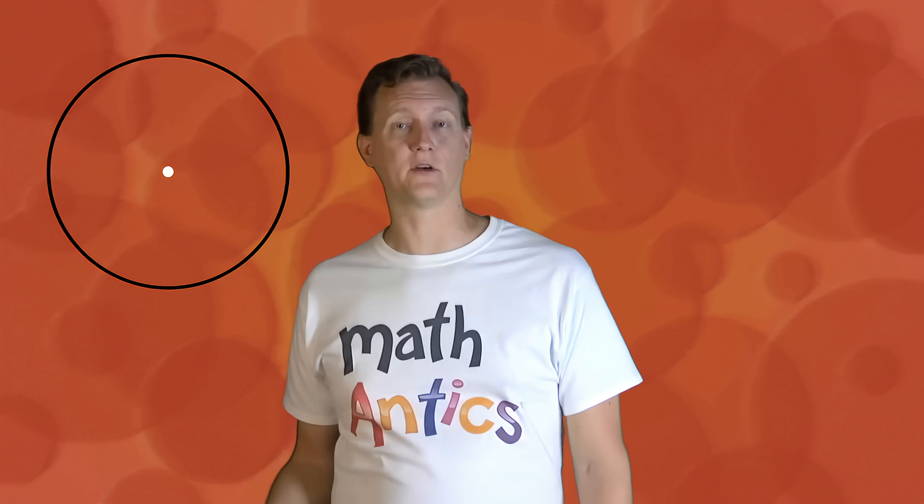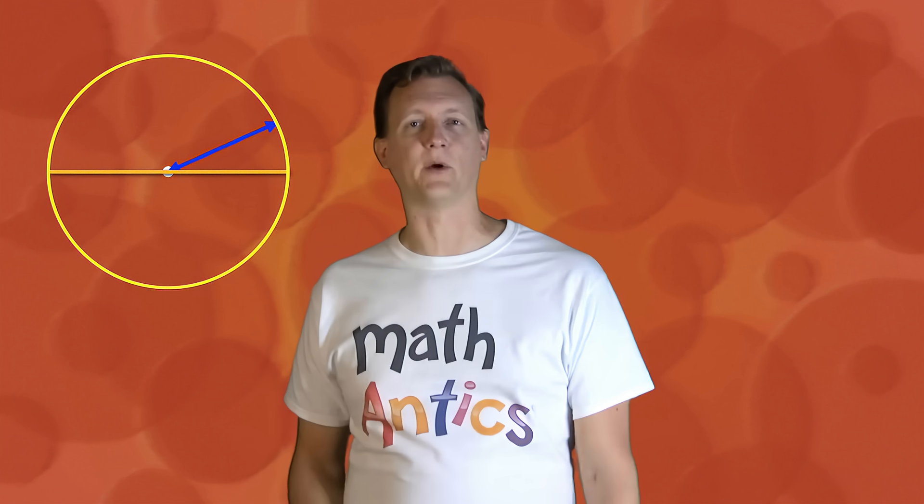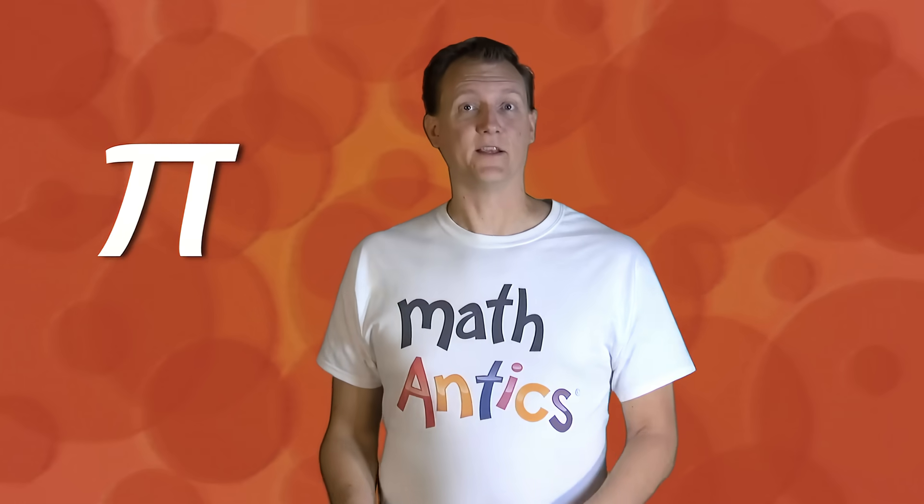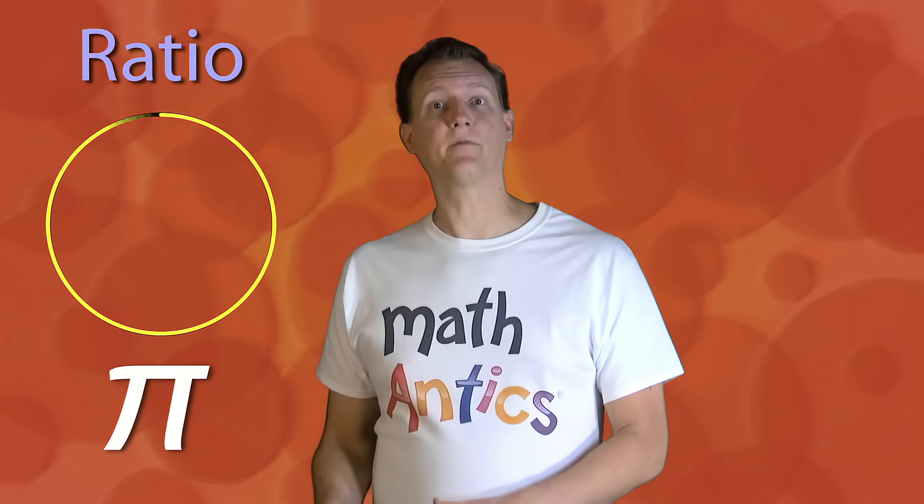Okay, so in this video, we learned what a circle is, and we've learned about the important parts of a circle – the center, the radius, the diameter, and the circumference. We've also learned about a very special number called Pi. Pi is the ratio of a circle's circumference to its diameter, and its value is about 3.14 no matter what size the circle is.